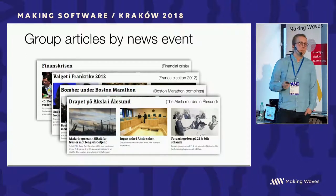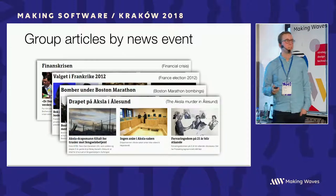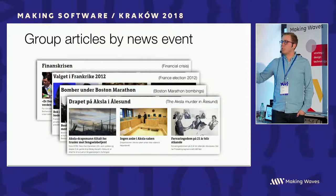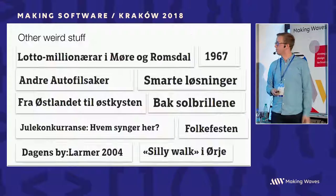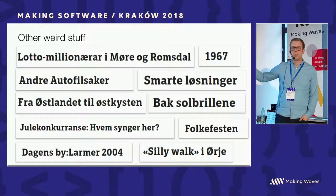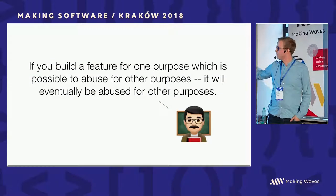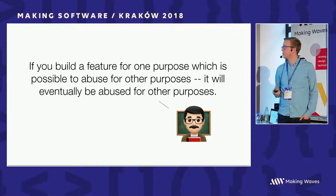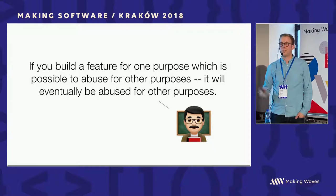We also use the same article collection to group articles by news events. When the financial crisis hit in 2008, some journalists created the financial crisis article collection — so this is not a topic, it's an event that happens in a specific time period. And a lot of other weird stuff. If you knew Norwegian you'd laugh at these slides because these are really strange categories. The point is: if you build a feature for one purpose which is possible to abuse for other purposes, it will eventually be abused — that's just how users are, even professional journalists.